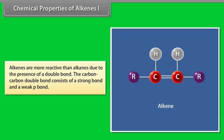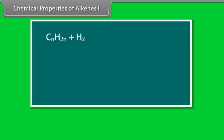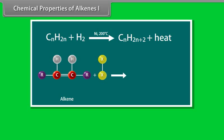Chemical properties of alkenes, Part 1. Alkenes are more reactive than alkanes due to the presence of a double bond. The carbon-carbon double bond consists of a strong sigma bond and a weak pi bond. The pi electrons of the carbon-carbon double bond are available to an electrophile — any species seeking electrons. Thus, the addition reactions shown by alkenes are in fact electrophilic addition reactions. Addition of hydrogen: alkenes add hydrogen in the presence of platinum or nickel catalyst to form alkanes. The reaction, termed hydrogenation, is an exothermic reaction.